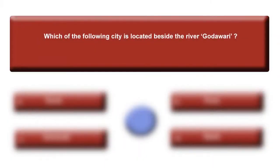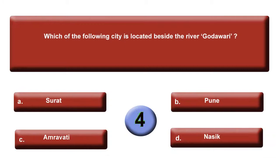Here is your first question: Which of the following city is located beside the river Godavari? You will be getting just 5 seconds for this. Your options are: option A, Surat; option B, Pune; option C, Amaravati; or option D, Nasik. Time is finished. The right answer is option D, Nasik.